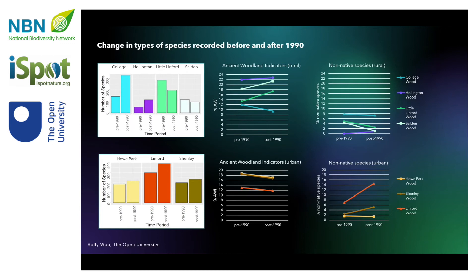The proportion of introduced non-native species in Linford Wood and Shenley Wood in Milton Keynes has doubled since 1990, while those in Howe Park Wood in Milton Keynes and all of the rural woodlands has declined slightly or remained low.